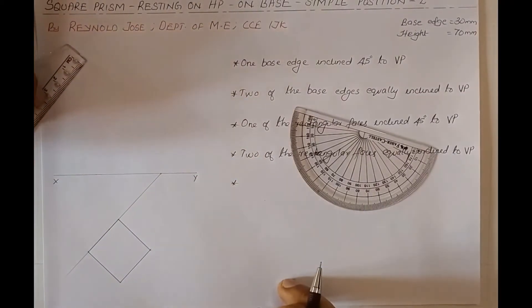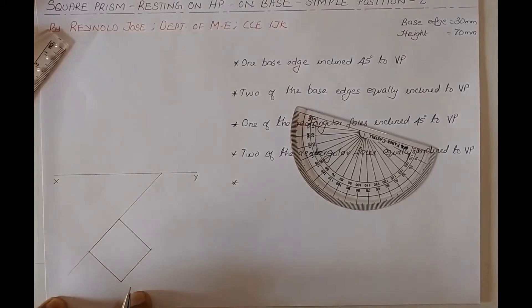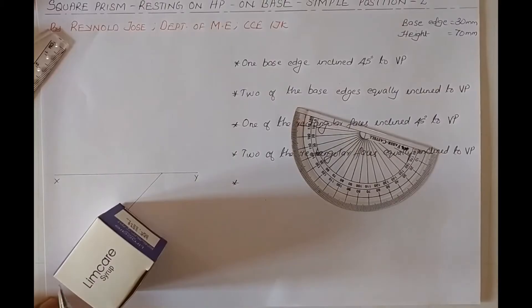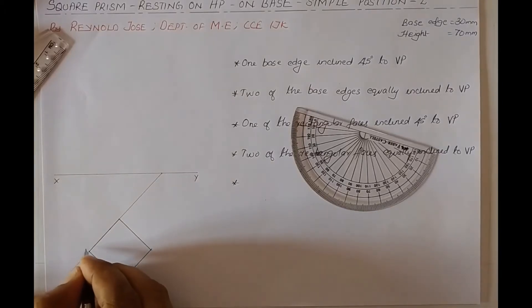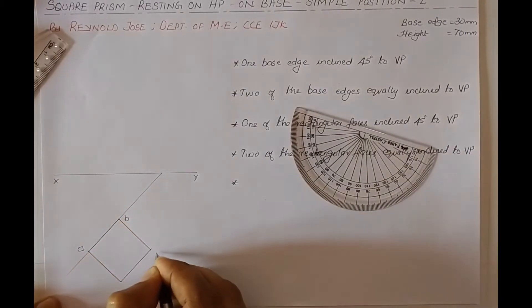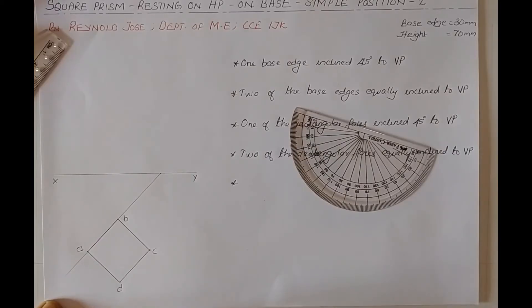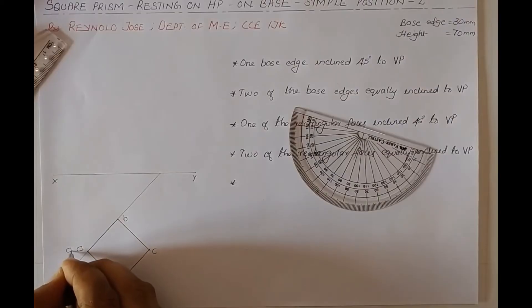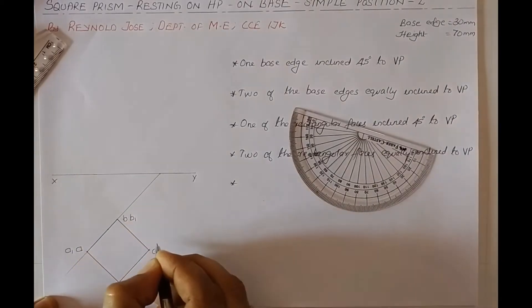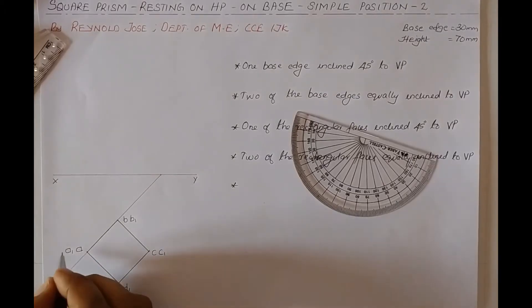This is the top view of the square prism. The base shape is obtained in the top view because the prism is resting on the horizontal plane. Observing from the top, we can see four corners: 1, 2, 3, 4, and there are four more corners on the base. We mark the visible four corners, then mark the invisible base corners in brackets, as they are not visible from the top.